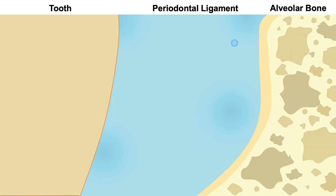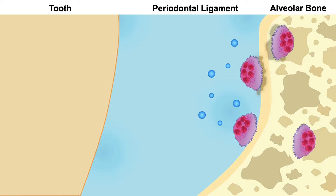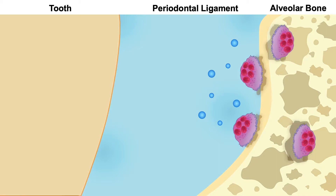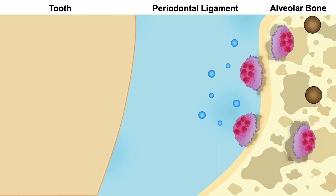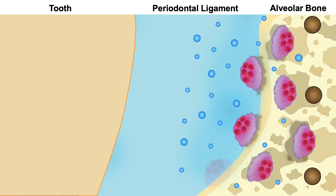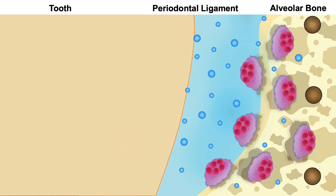Let's summarize the results of these studies. If we apply orthodontic forces, inflammatory markers appear in the PDL, and those activate the osteoclasts. When, in addition to the orthodontic forces, we apply a small perforation inside the bone, the magnitude of inflammatory markers increases further, the number of osteoclasts increases more, and the result of this increase in osteoclasts is temporary osteopenia in the area, accompanied by an increase in the rate of tooth movement.